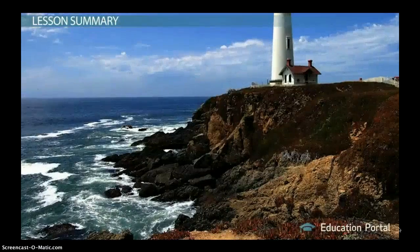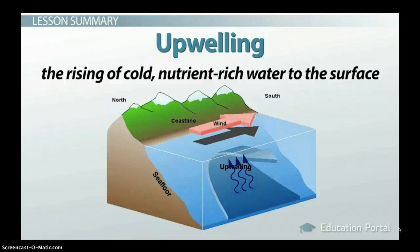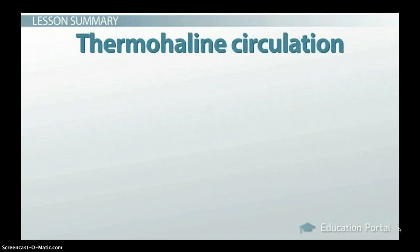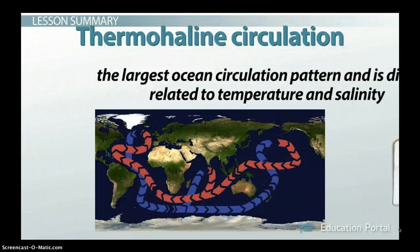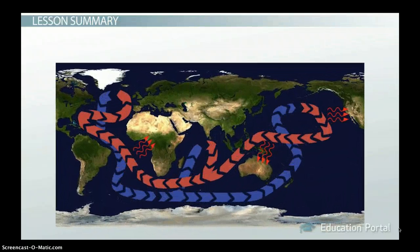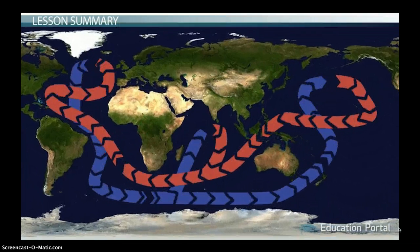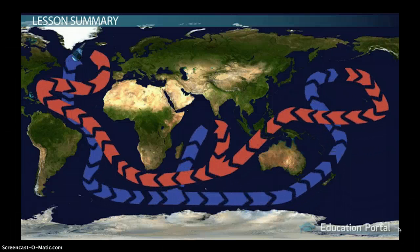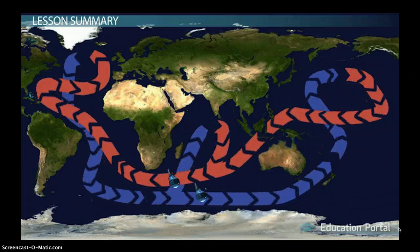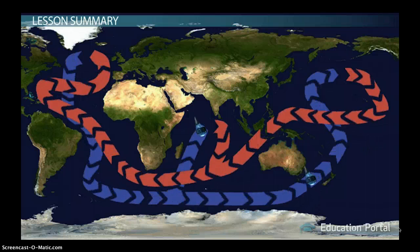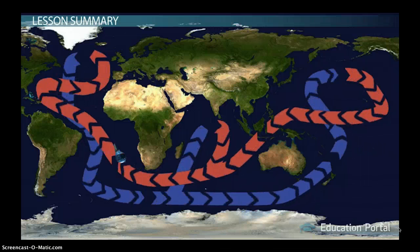Along windblown coastlines we may see areas of upwelling, which is the rising of cold, nutrient-rich water to the surface. Thermohaline circulation is the largest ocean circulation pattern and is directly related to temperature and salinity. This current moves a massive amount of water and distributes heat along its way, which in turn influences the global climate. The circulation pattern begins in the cold, salty waters near Iceland, moves south toward Antarctica, then moves along the bottom of the world before splitting into branches that travel into the Indian Ocean and Pacific Ocean. The branches rejoin as they turn west and get drawn back up to the polar regions where they began.